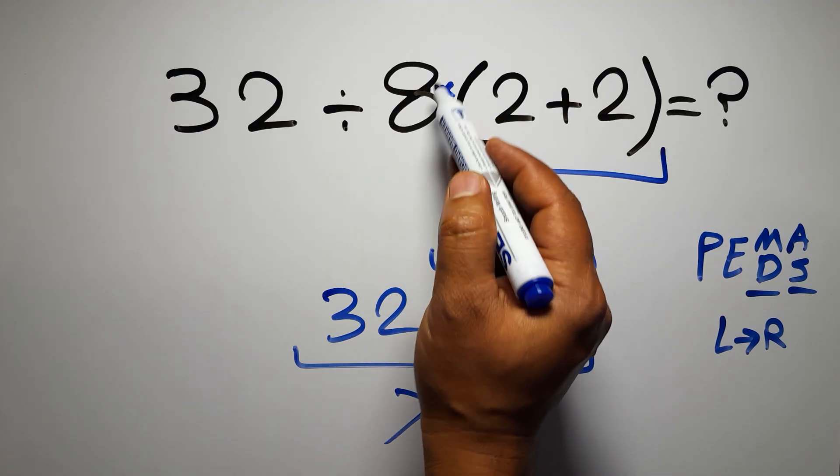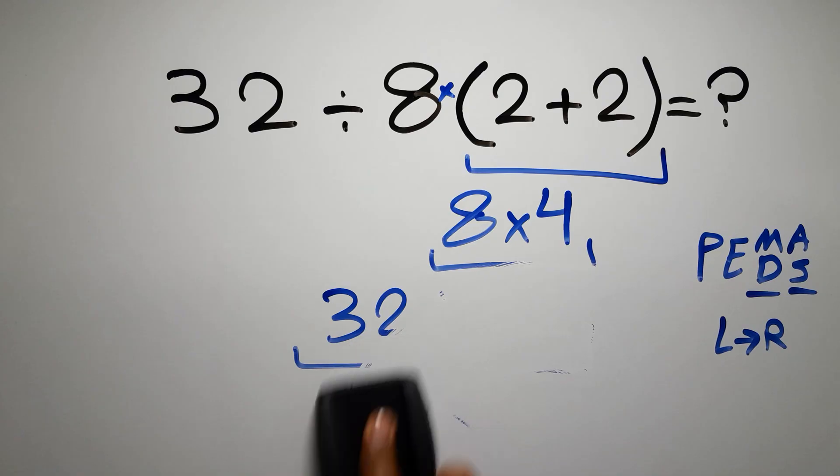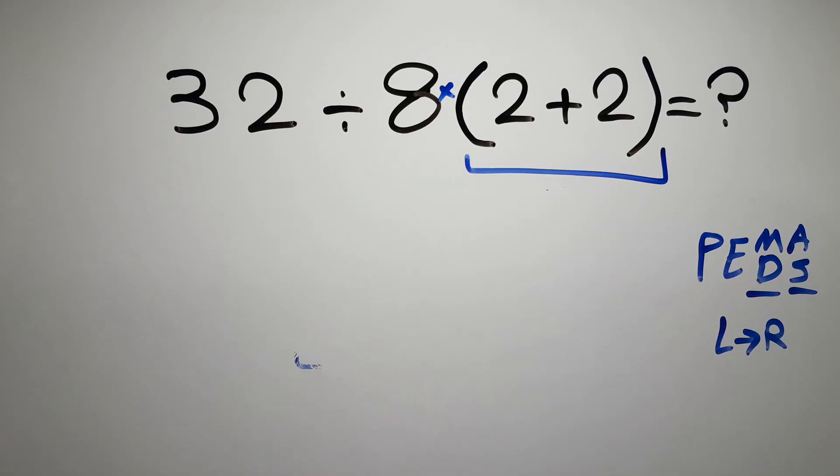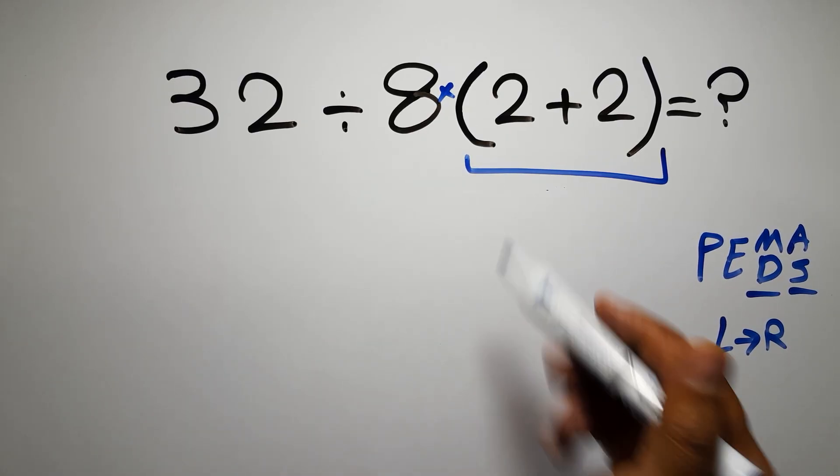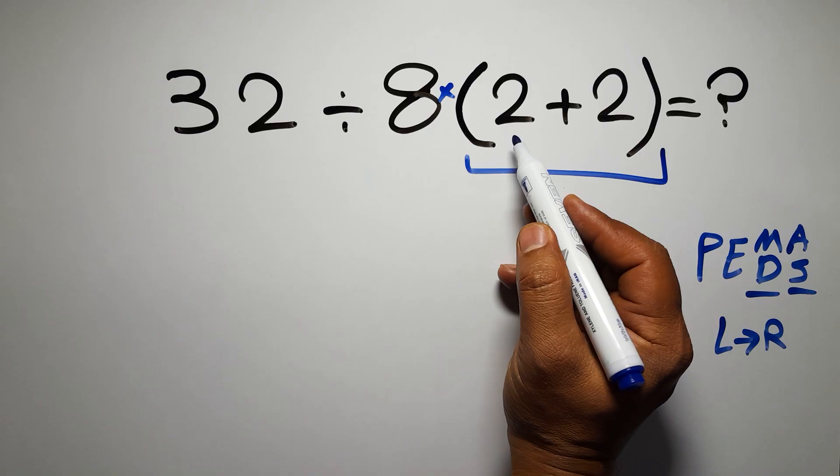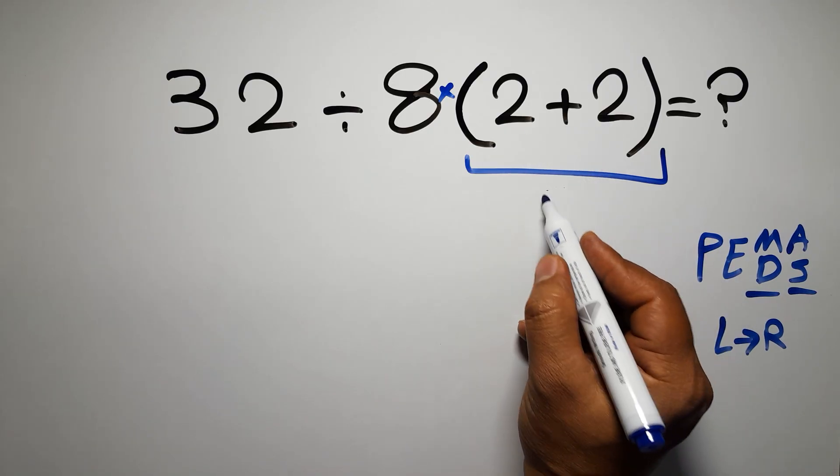If we do this multiplication before this division, it is wrong. So first this parentheses. Inside this parentheses we have 2 plus 2, which gives us 4.